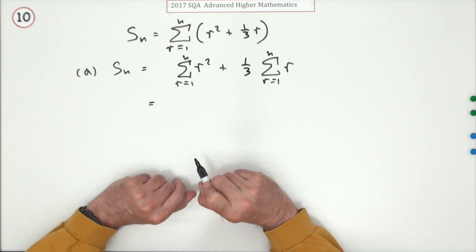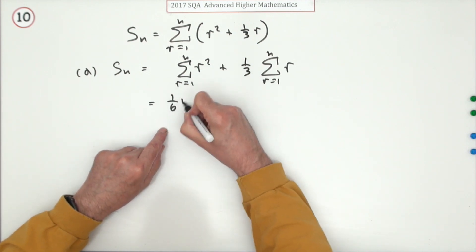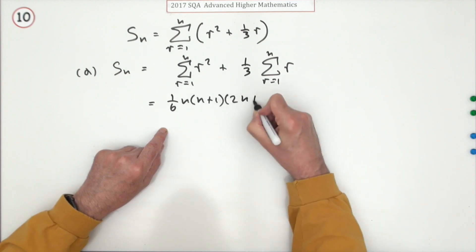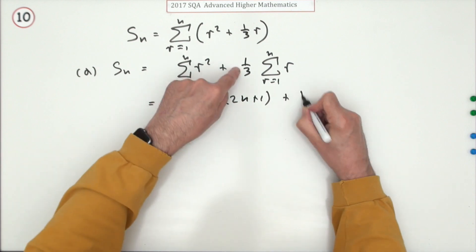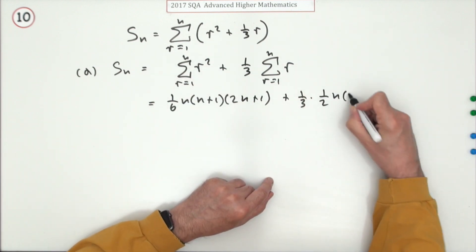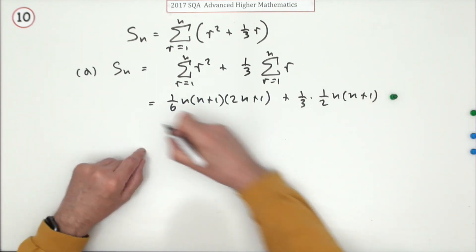When you look up the front, you find that it says one-sixth of n times n plus one times two n plus one, and that's going to be one-third of, and when you look up the front, that's one-half of n times n plus one. Doing that gets the first mark.